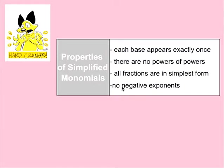Let's talk briefly about the simplified property. When directions say to simplify monomials, here's a checklist: each base appears exactly once; no powers of powers (e.g., A squared raised to the second); all fractions are in simplest form; and there are no negative exponents.